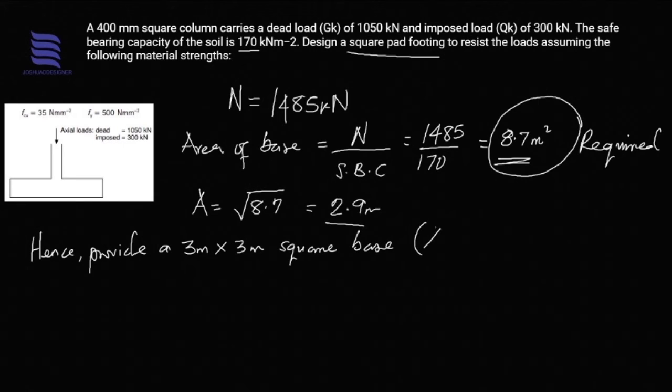The area provided will be 9 meter squared, such that our provision is slightly above the required area so we can be sure of the pad base being able to accommodate that load in question. This is simply how to obtain the area of your pad base respective to the load applied and the soil bearing capacity.